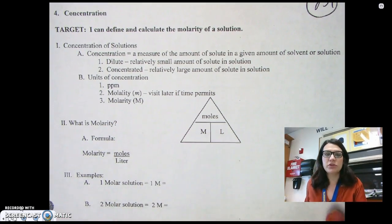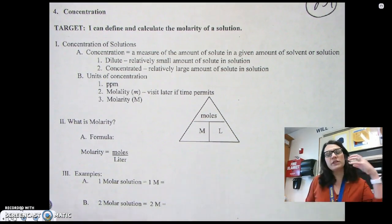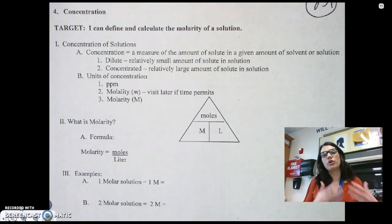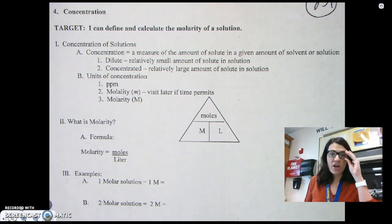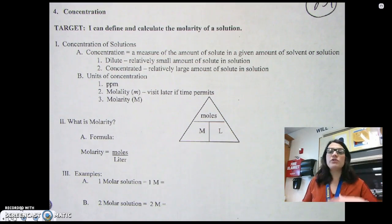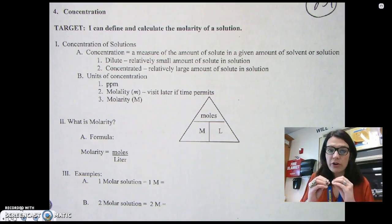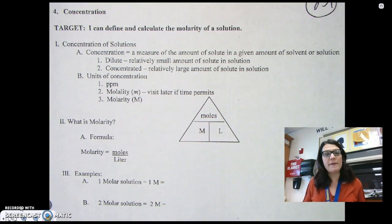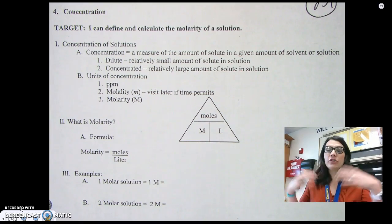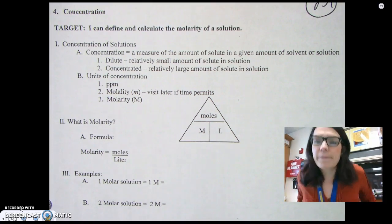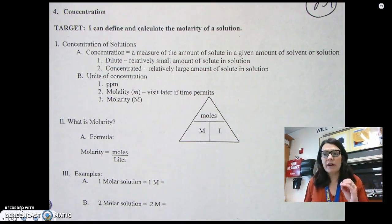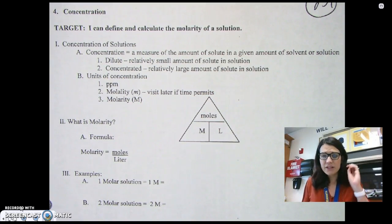So concentration of solutions is just going to be how much of a solute do we have in a given solvent. If something is diluted that means you have a really small amount of solute in your solvent, whereas if something is concentrated we can have a relatively large amount of solute in solution. And we're actually going to put numerical values to these diluted versus concentrated.